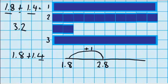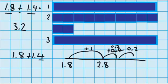Then I've just got the four tenths that I need to add. So I'm going to do one more jump of 0.4 or four tenths. 2.8 plus 0.4 — I can imagine that as two jumps of 0.2 if I like, which might even be easier. 0.2 and another jump of 0.2, so in total I'm jumping up 0.4. Well, 2.8 plus 0.2 is 3, plus another 0.2 takes me to 3.2.